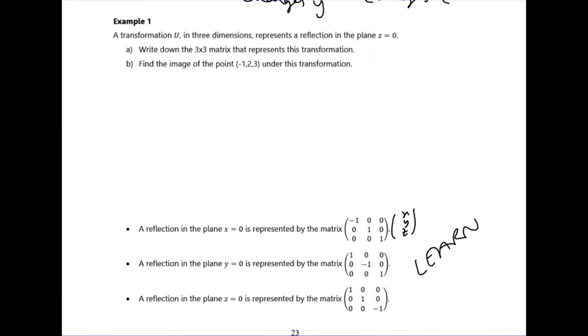This example here says the transformation in three dimensions represents a reflection in the plane Z equals zero. Write down the three by three matrix that represents this transformation. So it's the identity matrix except the one in the Z position. So the bottom right one is negative, as we're changing the sign on the Z values. Then find the image of the point under this transformation. You're just doing the matrix multiplication. Multiplying that three by three by the vector minus one, two, three. And all it will do is change the sign of the Z coordinate. So if you do this first row times the column, it just times minus one by one. Second row times the column just times two by one. And then the third one changes the sign on that.